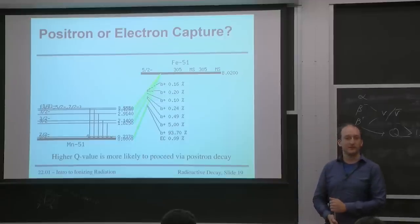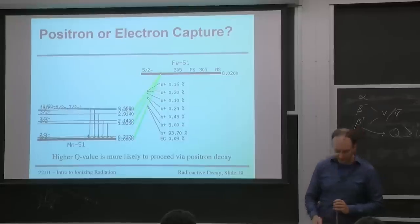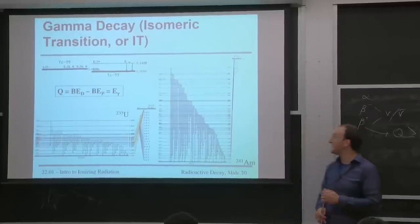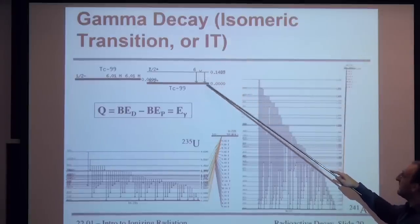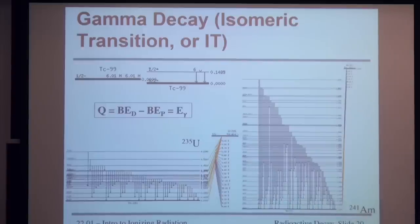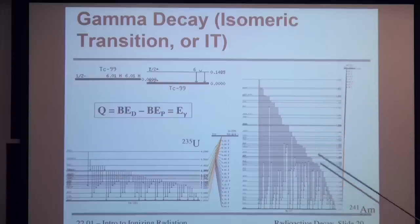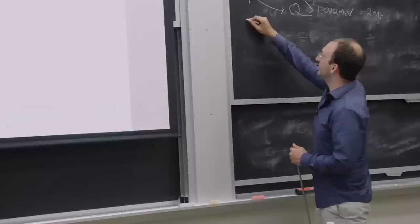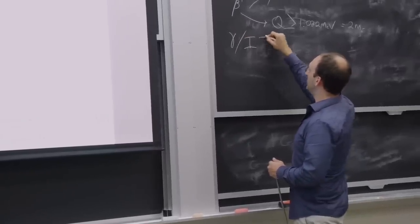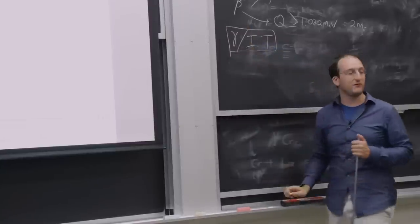One way of reducing the number of protons is to emit a positron. Another is to gobble up an electron. In the end, they make the same daughter products but go by different mechanisms and give off different bits of radiation which we can actually sense and measure. On to gamma decay, or isomeric transition — these range from the dead simple, like technetium-99 metastable giving off a characteristic 140 keV gamma ray used in medical imaging, to the ridiculously complex, like americium-241, which has a lot of different nuclear energy states all releasing anywhere between one and many gamma rays.